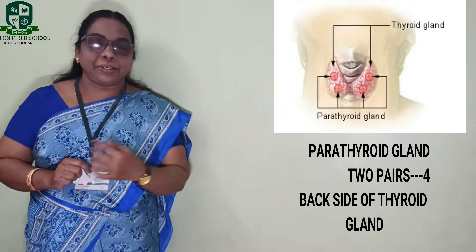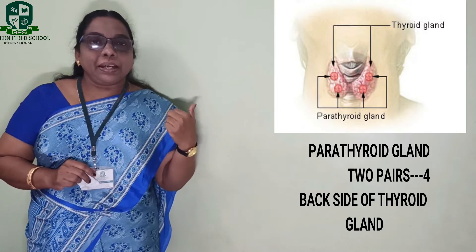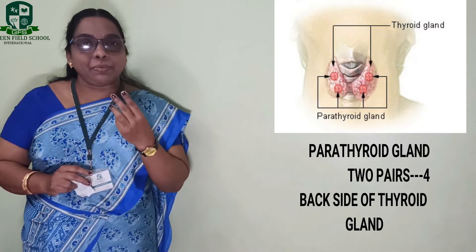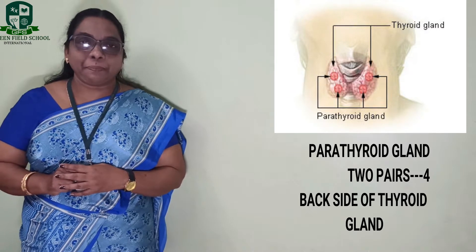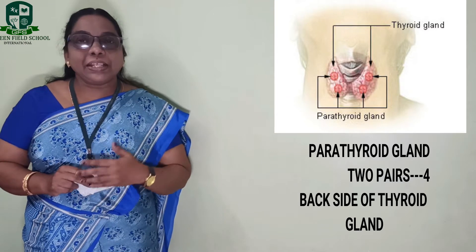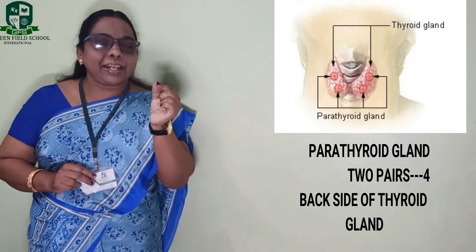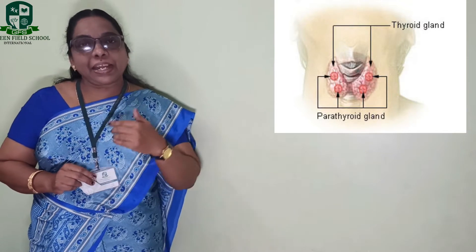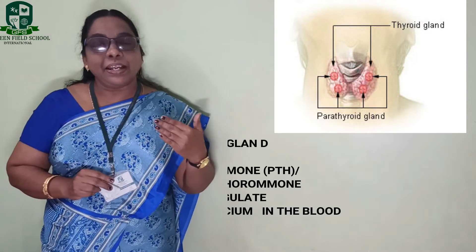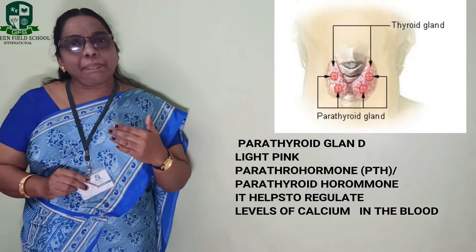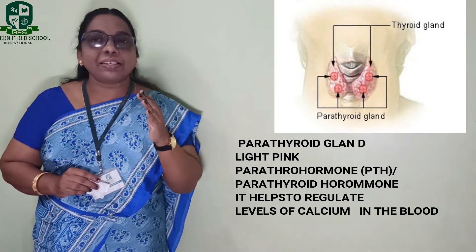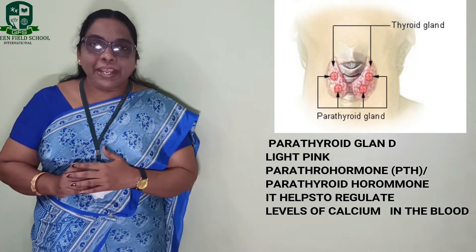Look at this picture. If you observe, there are two pairs of parathyroid glands present — that means almost four parathyroid glands in total. They are present on the back side of the thyroid gland, and they are light pink in color. This gland produces a hormone called parathormone, or we can also call it parathyroid hormone.